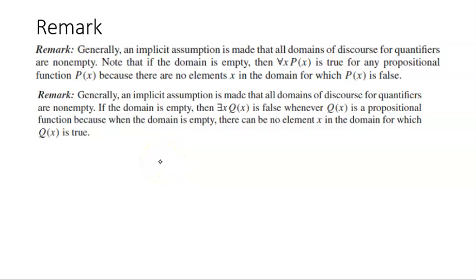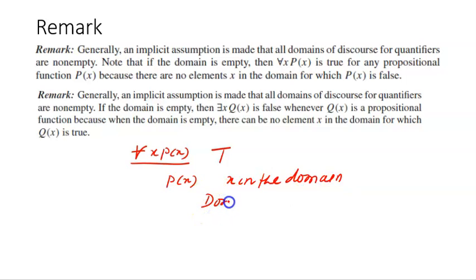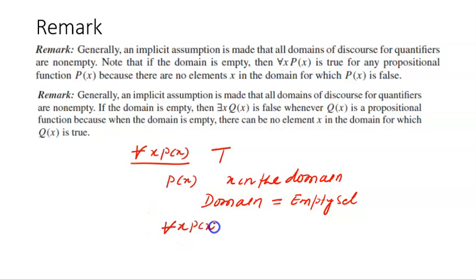We have seen in the last video that the statement 'for all x, P(x)' is true when P(x) is true for every value of x in the domain. Now there may be a situation where the domain is empty. Ideally the domain is expected to be non-empty, but suppose the domain is an empty set — in that case, the statement 'for all x, P(x)' will be true.